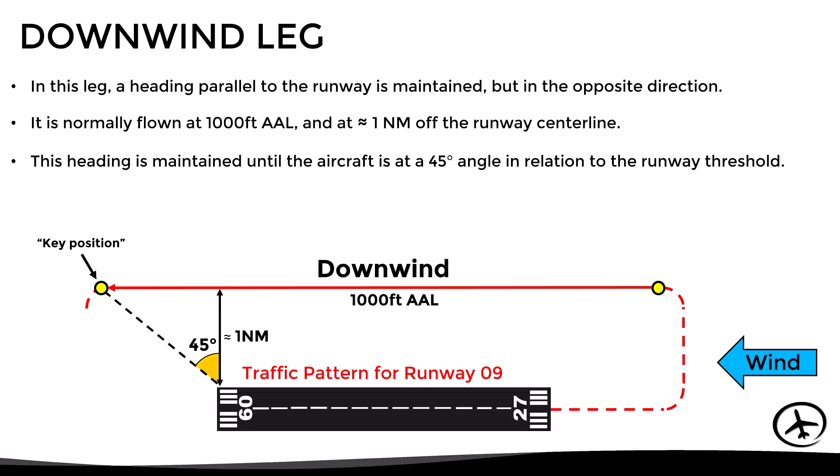This leg is flown leveled at that altitude, staying approximately one nautical mile off the runway centerline. This heading is maintained until the aircraft reaches a key position that is at a 45-degree angle in relation to the runway threshold. It is at this point where the aircraft would start the turn to the base leg.